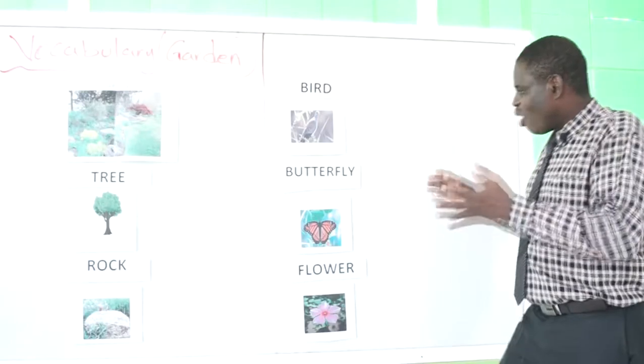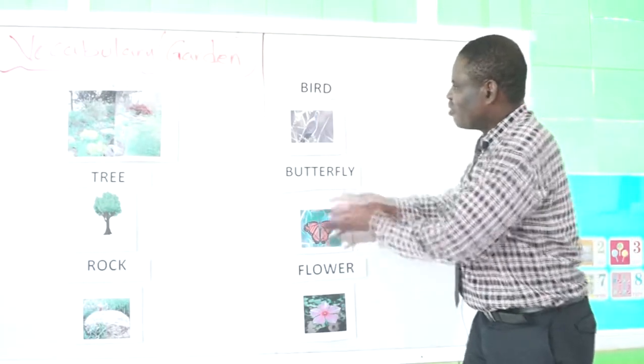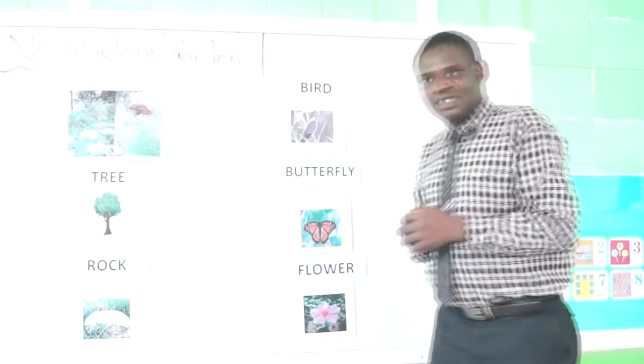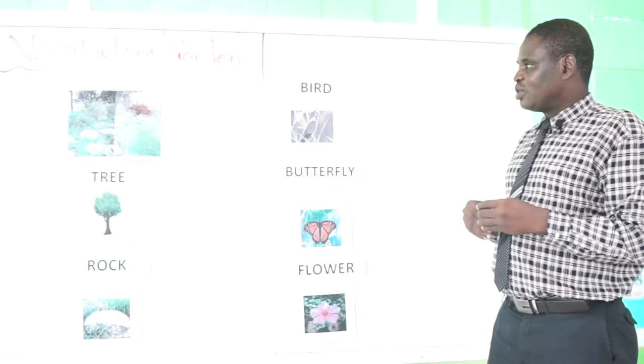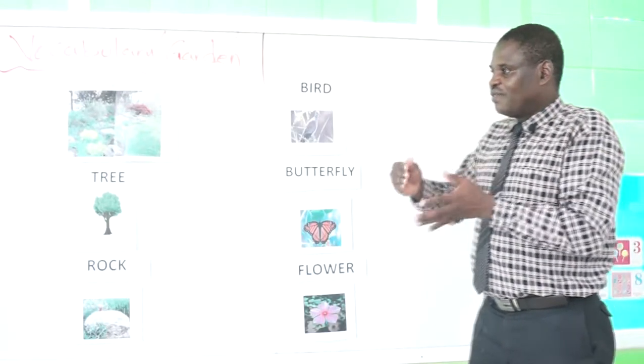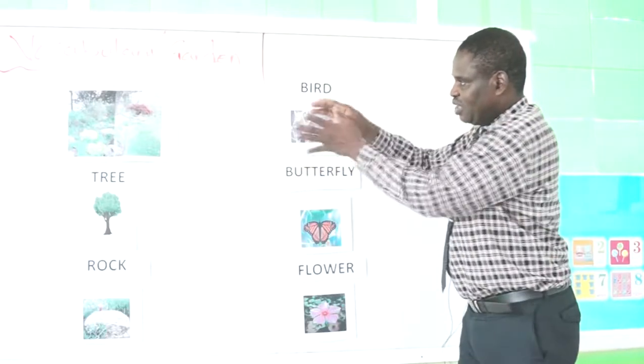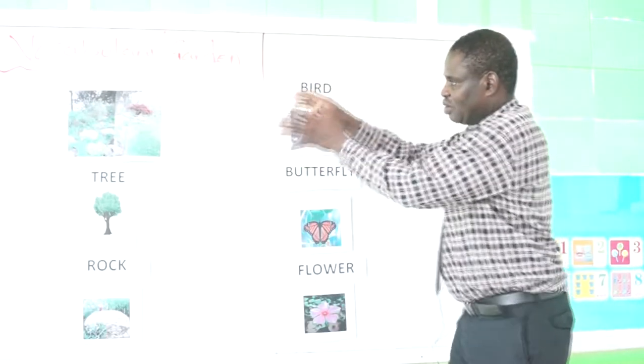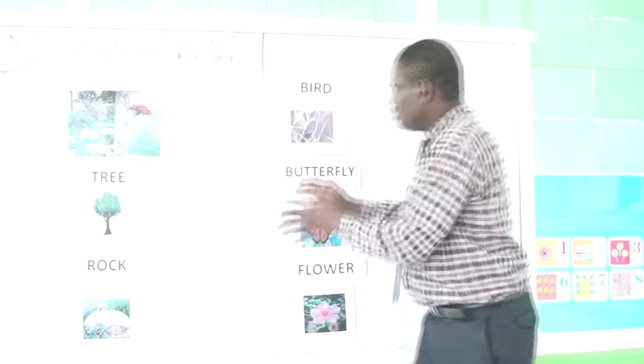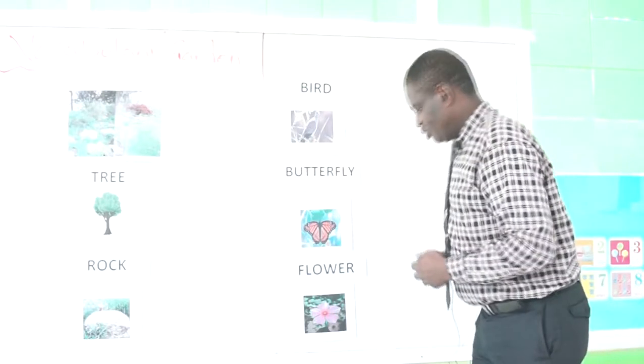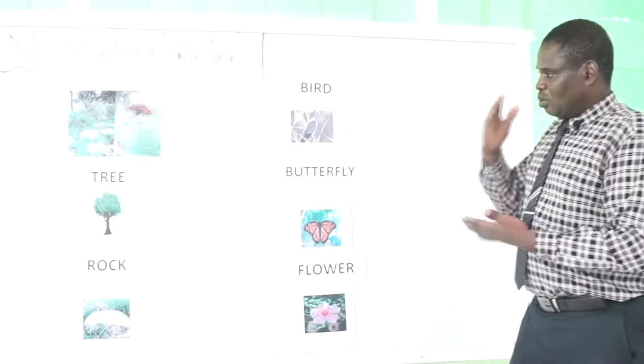They are all things that can be found in this place. I also mentioned about garden which we have different kinds of garden, but today's focus is on this simple garden where these items can be found.